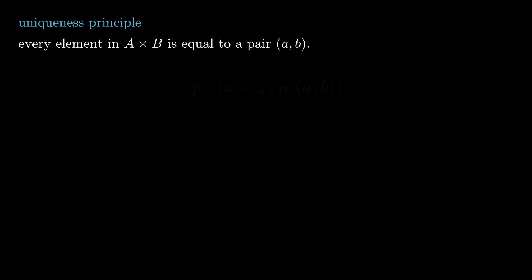Why is this so subtle? Well, this is due to how the identity type is defined in type theory. So let's say we are asserting that X in A cross B is equal to the pair little a comma little b. In type theory, this means that the type X equals A comma B is inhabited, meaning there is an element P in the type X equals A comma B.